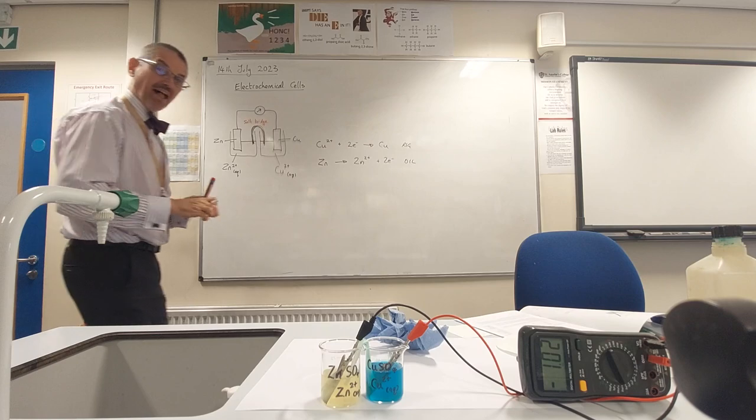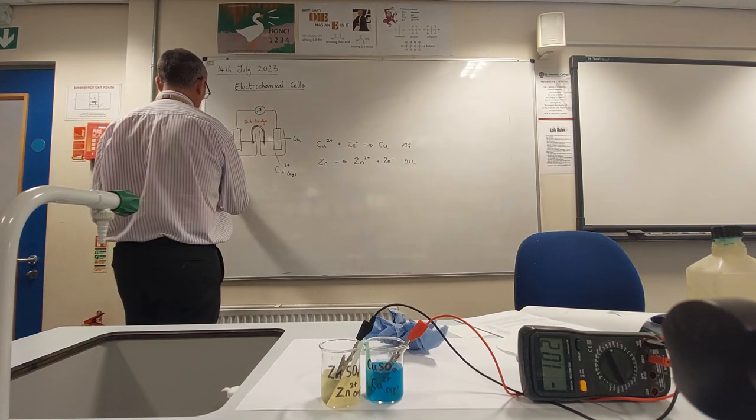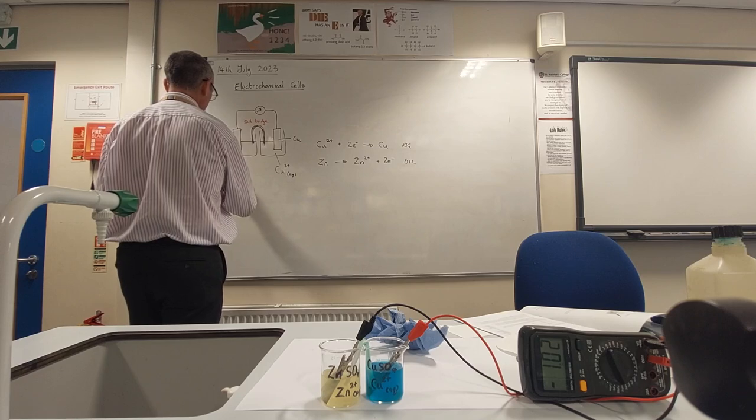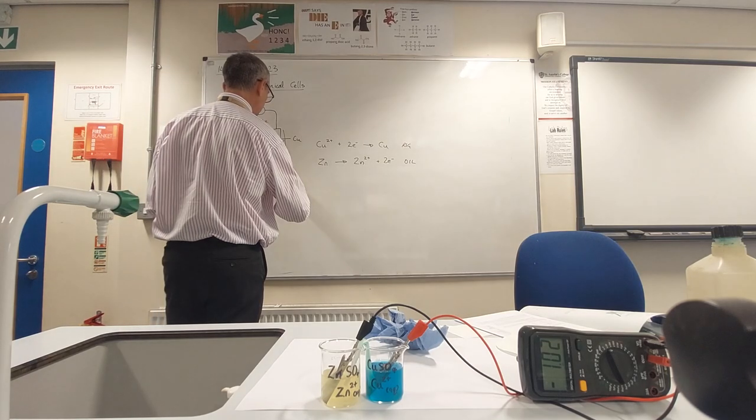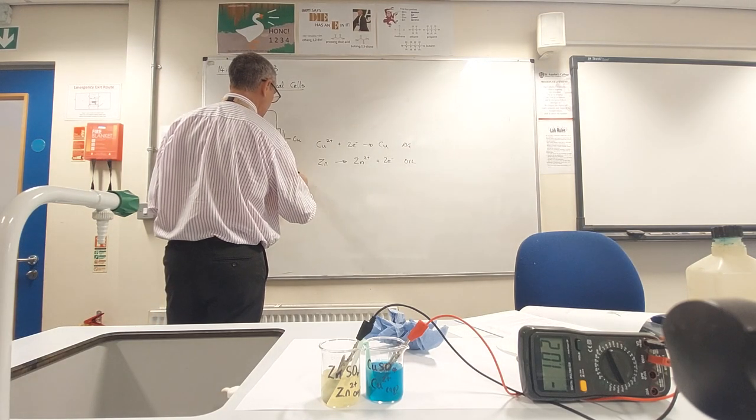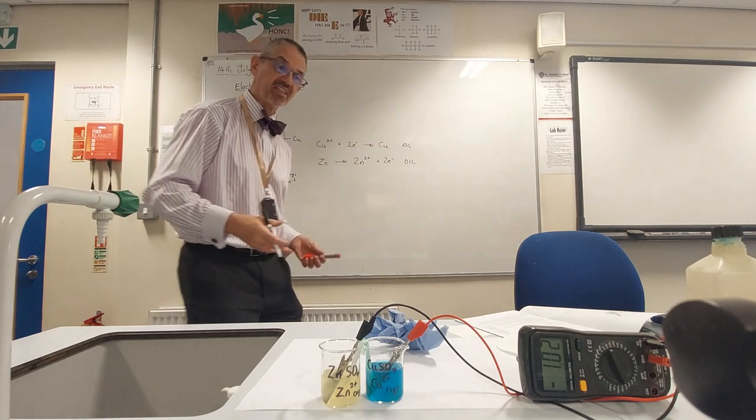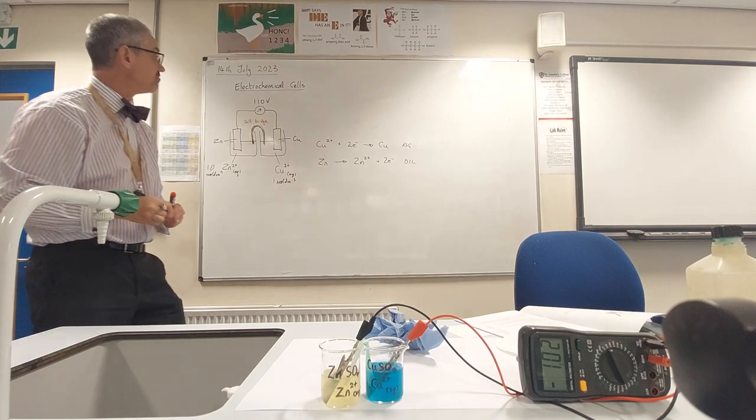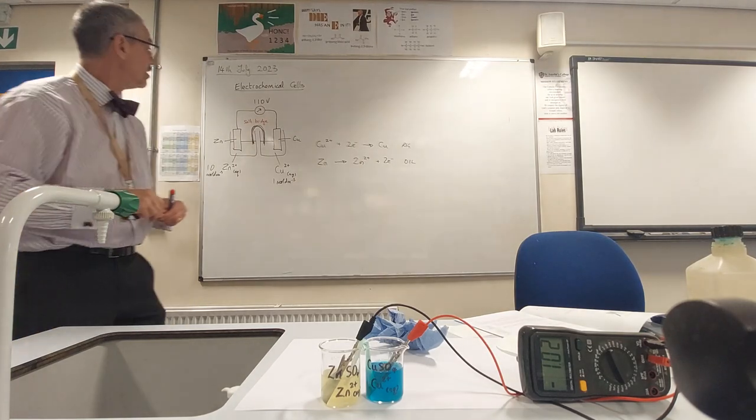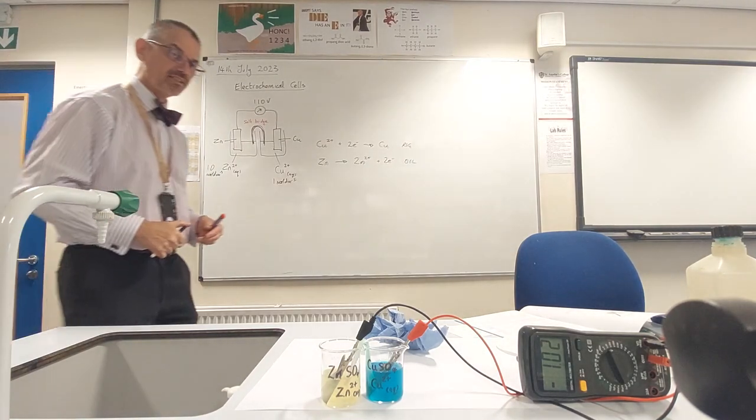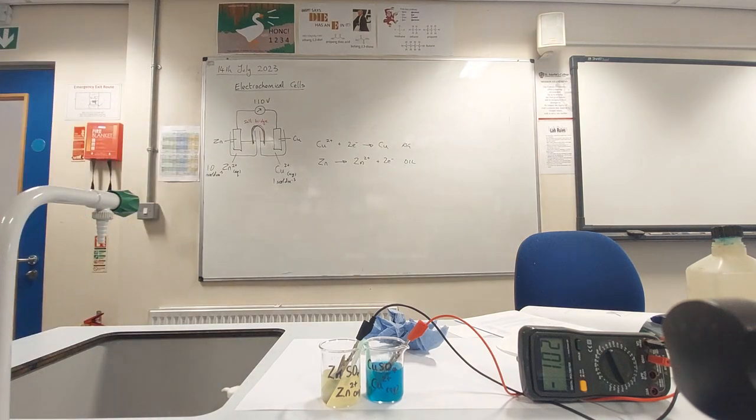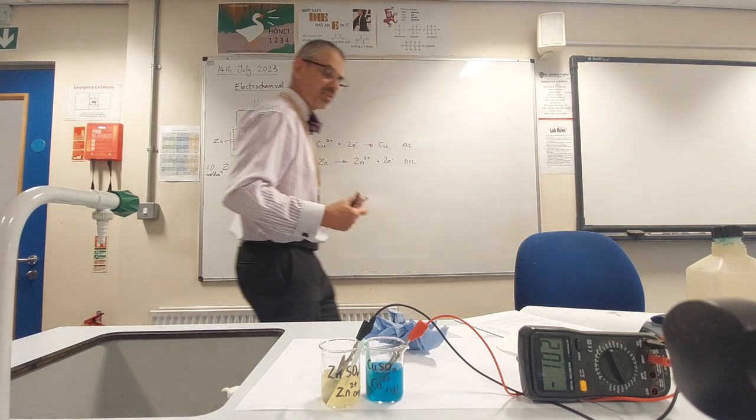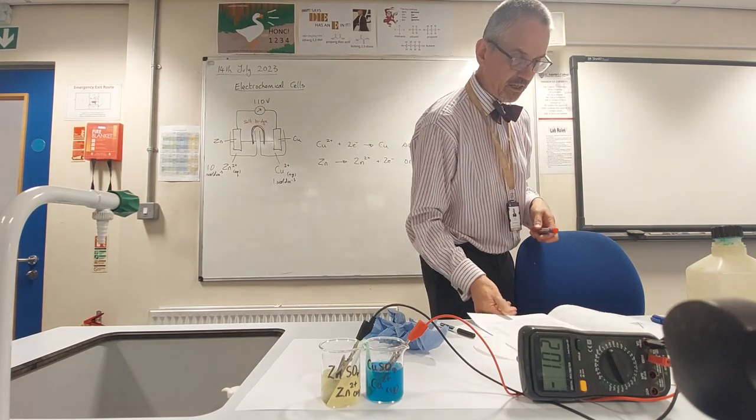If all was well and I had a one mole per dm³ solution over there and a one mole per dm³ solution over here, and everything was perfect and there was no resistance in the wires and so on, we should get 1.1 volts. So it was about 1.02 when I first connected it up, and then it does start to drop. What's it reading now? Oh, 1.02. That's pretty good.